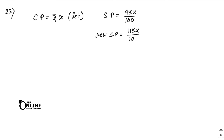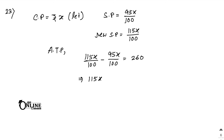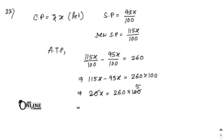According to the problem, subtracting the first SP from the second: 115x minus 95x equals 260 into 100. So 20x equals 26,000, which gives x equals 1,300. So 1,300 is the cost price.